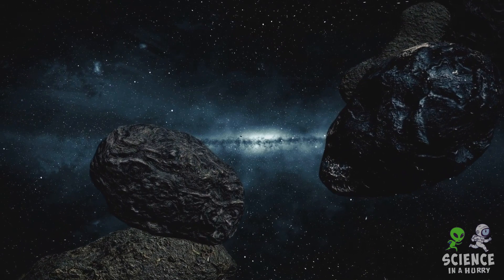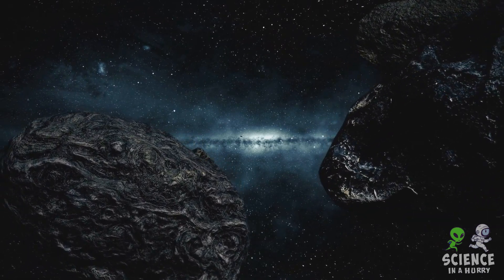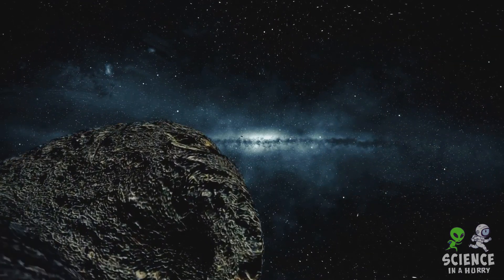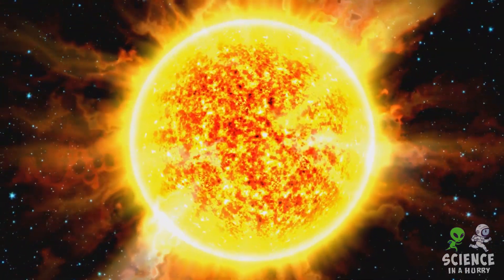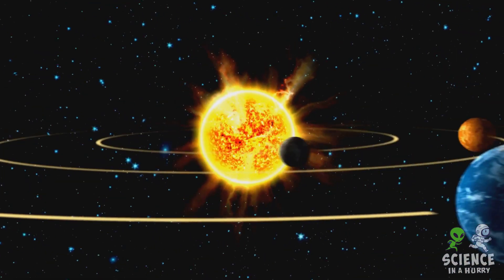The planets that form closest to the star are typically rocky, as the intense heat and solar winds blow away lighter elements. These are the terrestrial planets, like Earth and Mars in our solar system.